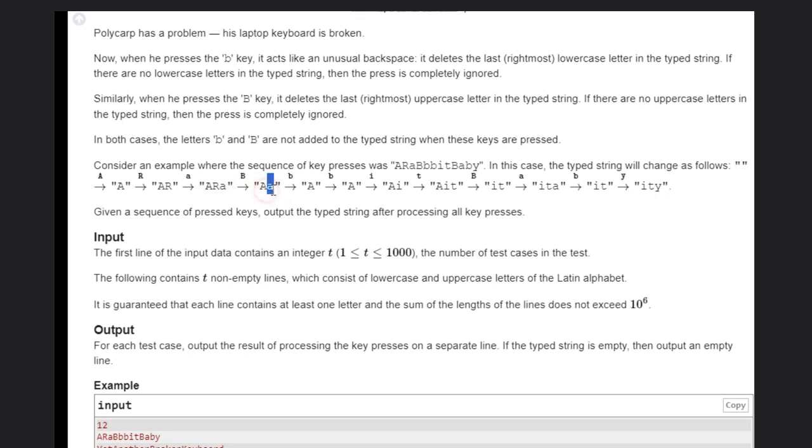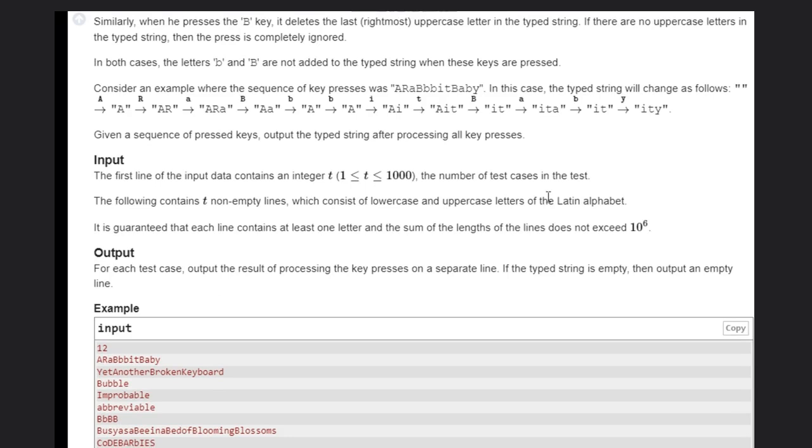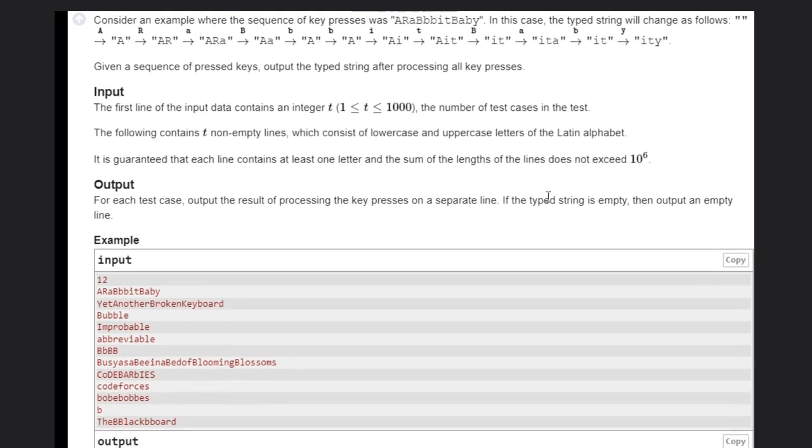And then B is there. So, it will also remove B. Hence, A is there. Then we are going with B again. But there are no small characters. So, nothing will happen. We will add similarly, A, i, T, A i t. Hope you understand this example. This is a very simple example.